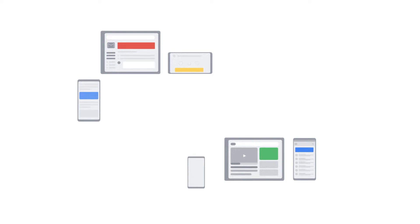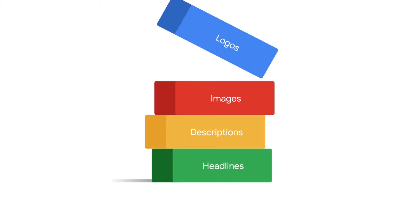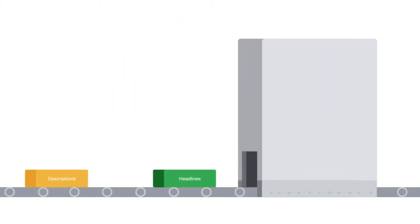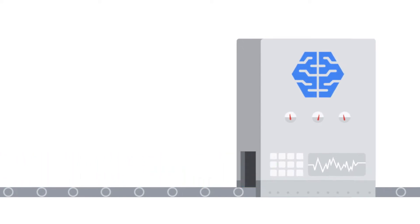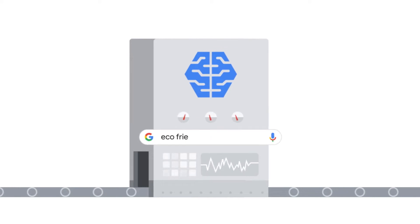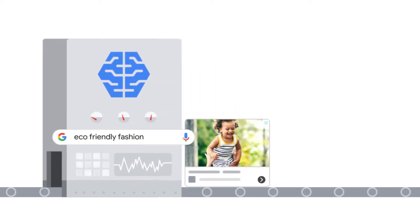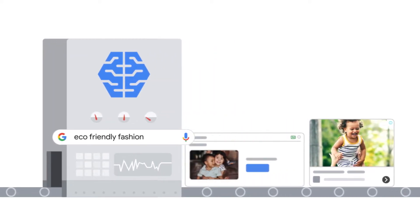Responsive display ads are a form of asset-based ads that show up on the Google Display Network. An asset is part of an ad, such as a headline, description, image, or logo. To create responsive display ads, you upload assets into Google Ads. Then, machine learning algorithms combine these assets in countless combinations while continuously optimizing for performance. In this video, we'll review creative best practices for responsive display ads in order to reach customers and drive performance.